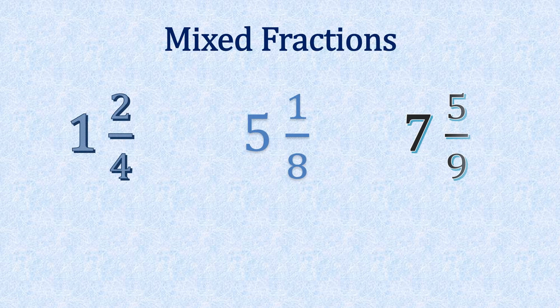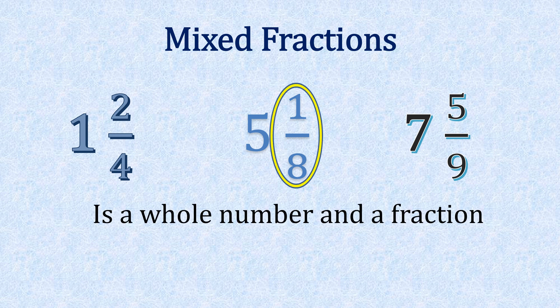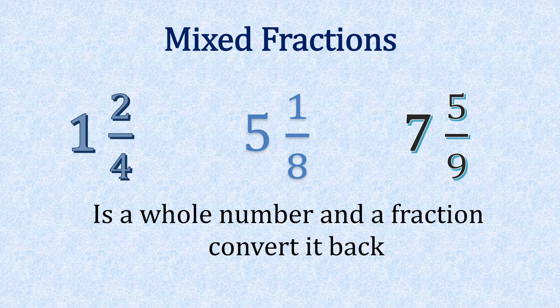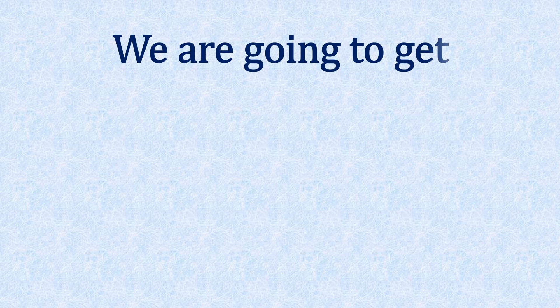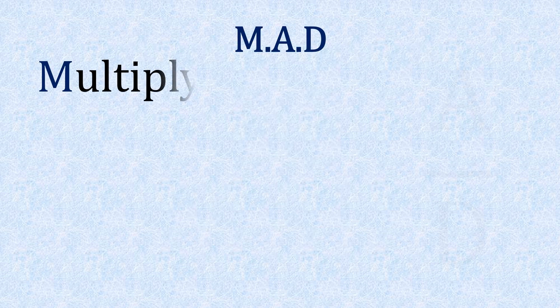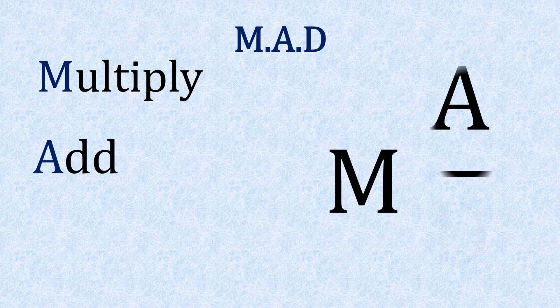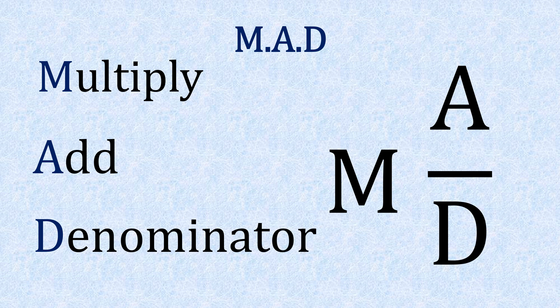Mixed fractions — what is that? Well, that's when you have a whole number and a fraction. So we need to learn how to convert it back. To do this, we're going to get MAD. This is a formula for converting a mixed fraction. M for multiply, A for add, and D for denominator. Notice the way we write MAD.